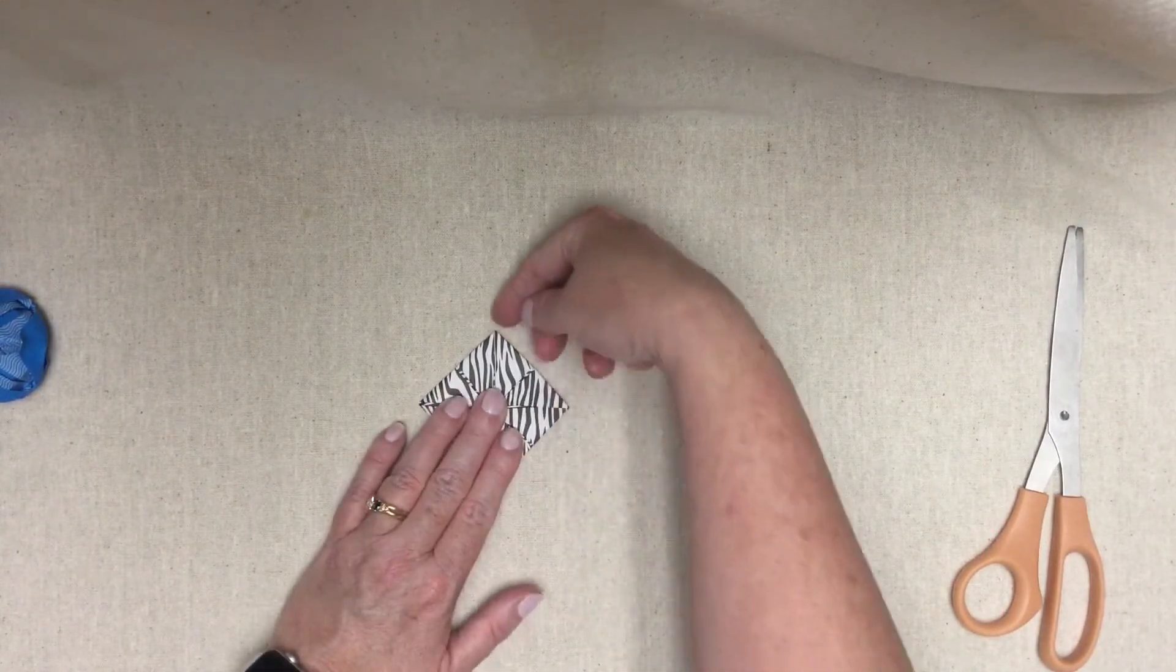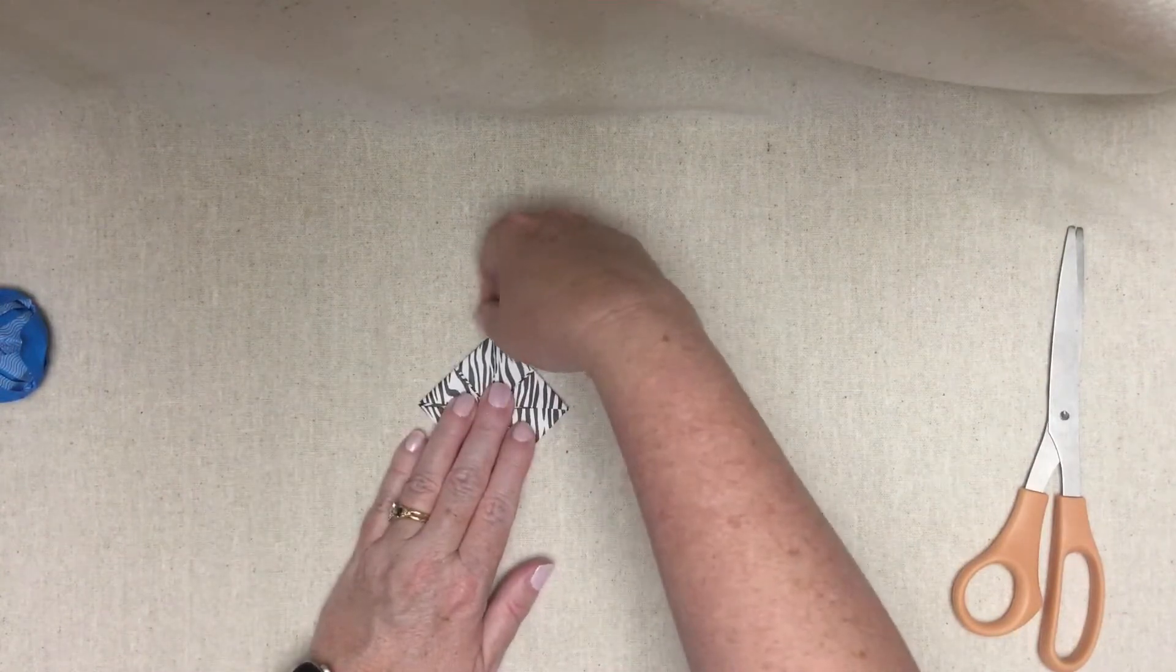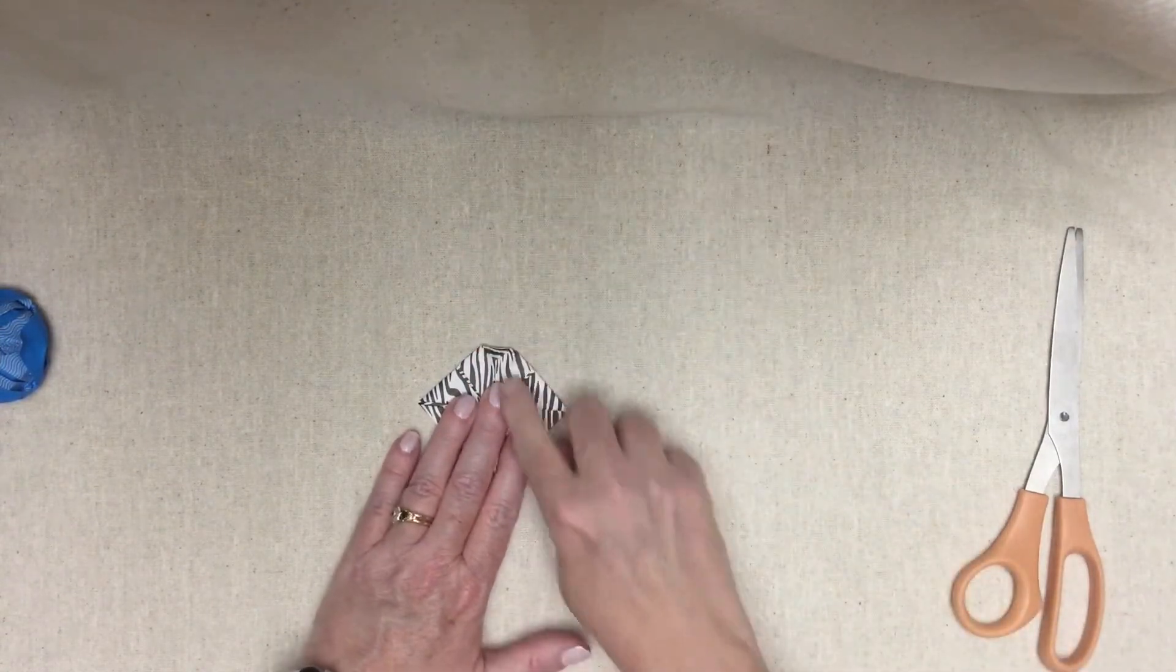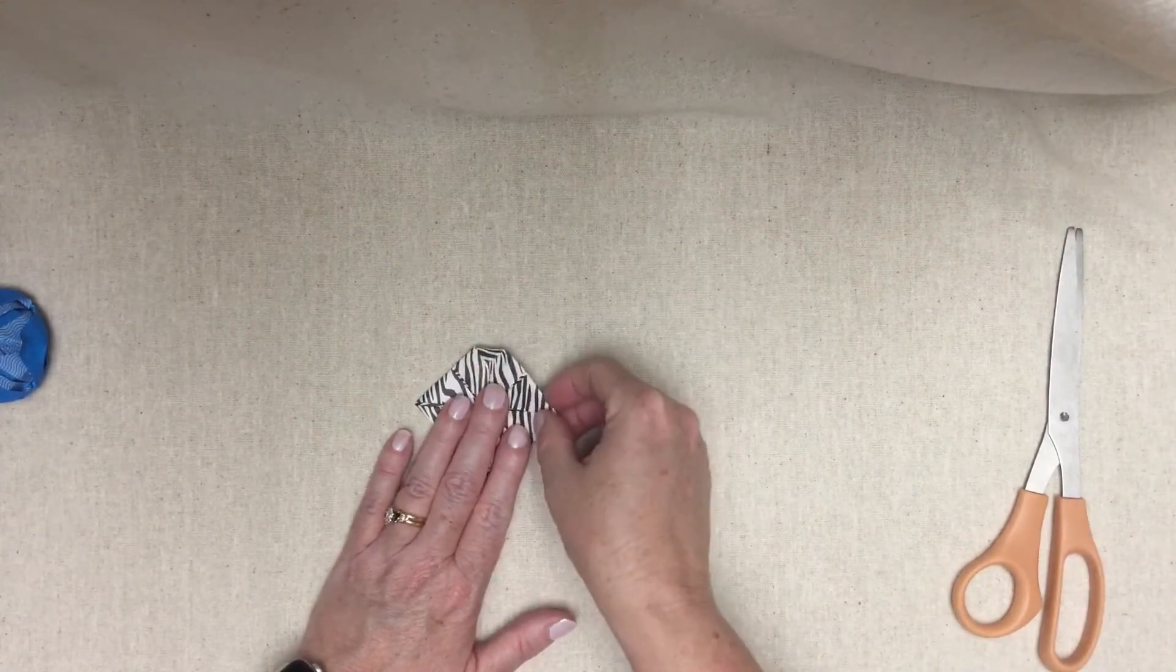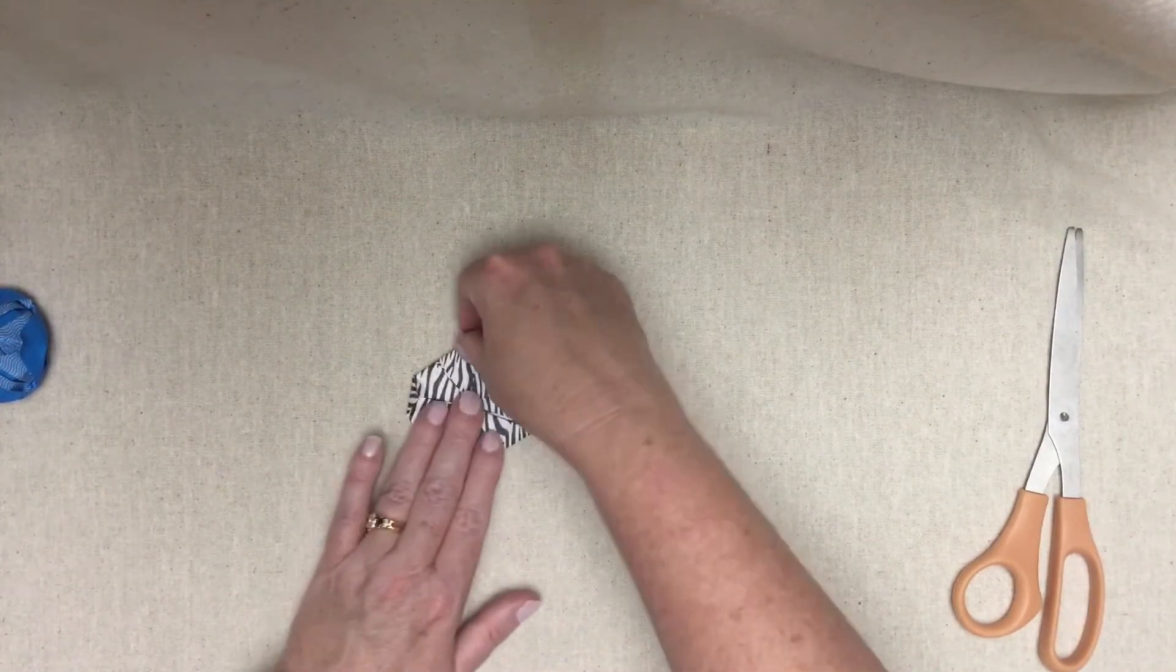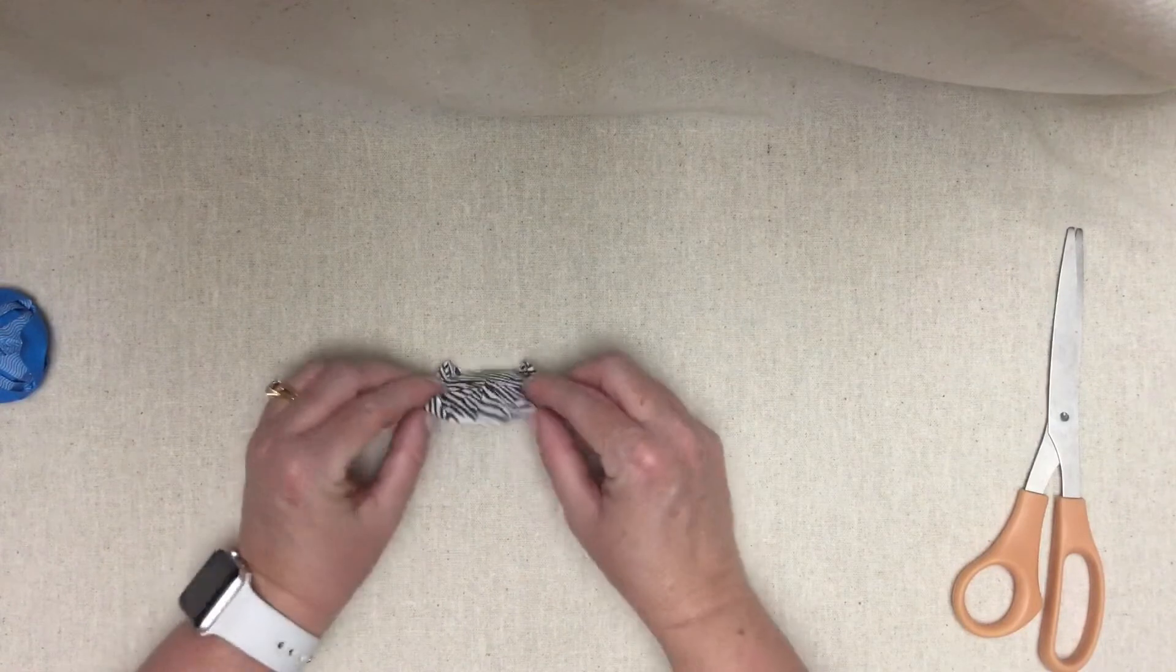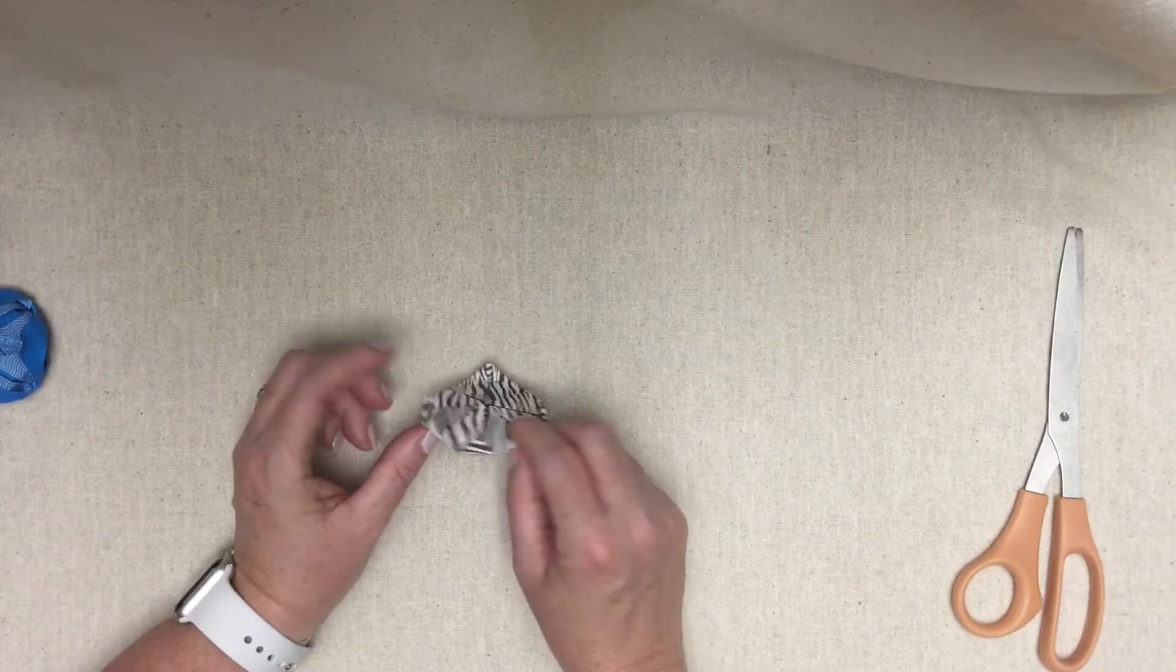Next step, with each of these points of the square, you're going to take the tip and fold it inward. It doesn't have to lie flat. It wouldn't with this thickness of paper, even if you needed it to. All right. And once you've done all four, it'll look something like that.